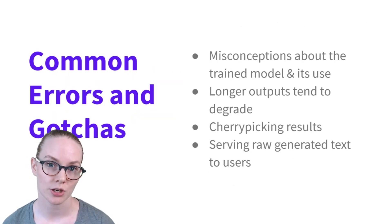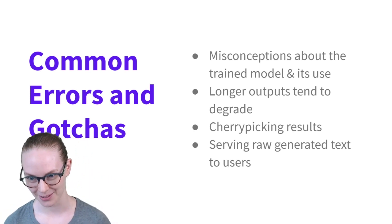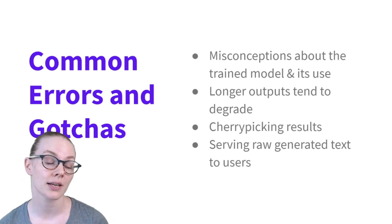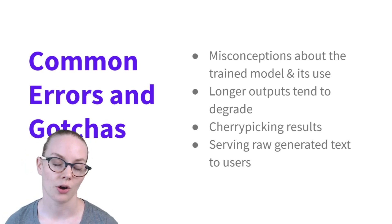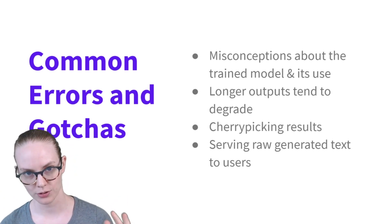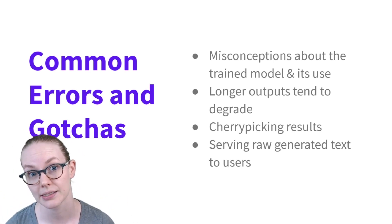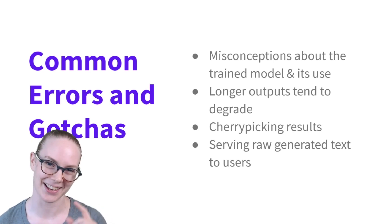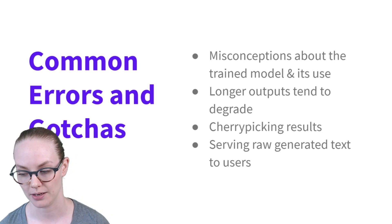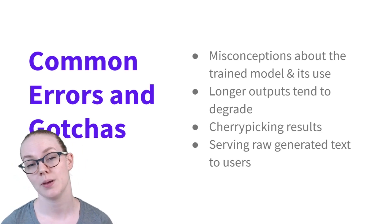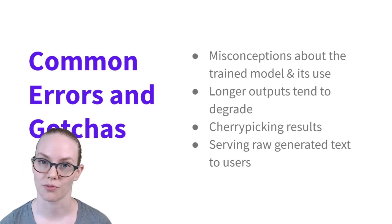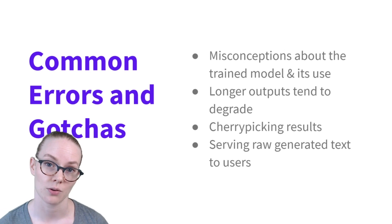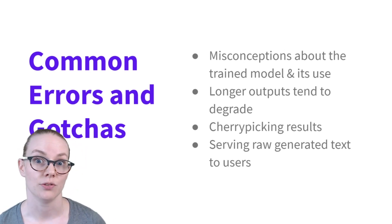Some common errors and gotchas. Most people don't have access to this model based on discussion around it. A big one is misconceptions about what this model is, what it can do, and how you should apply it — again, all it does is predict the next word. Another thing the authors mentioned is that longer outputs tend to degrade: the more text you ask the model to produce, the more likely it is to become nonsensical, start repeating itself, or add weird half-sentences at the end. Another problem — and this one is on humans — is cherry-picking results. A lot of the things shared of GPT-3 doing really cool, interesting stuff have been picked by humans; often a human will produce several outputs and pick the one that sounds best, so it's not a good representation of the raw output of the model.